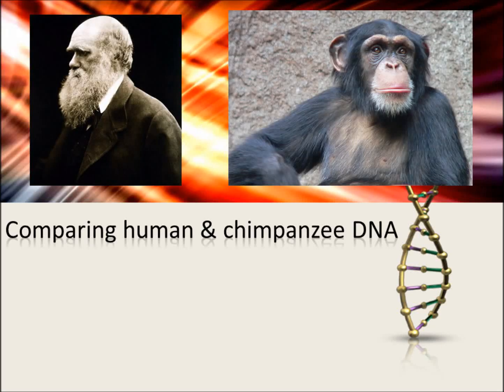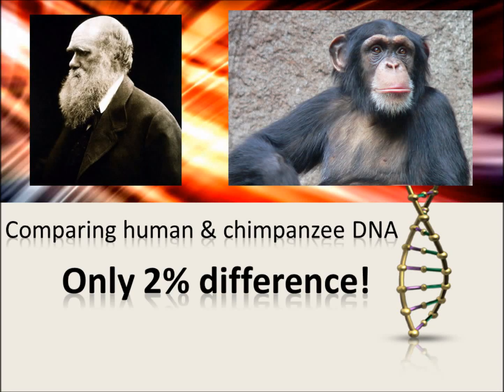Comparing human and chimpanzee DNA. Scientists say that our genes differ only about 2% with that of a chimpanzee. But how exactly do they know? In a couple of minutes, you will know.